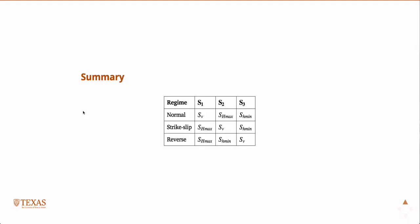The vertical stress would always be on the diagonal of this table. So that's Anderson classification.